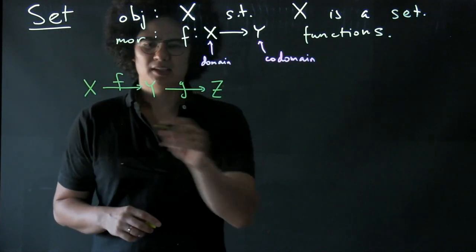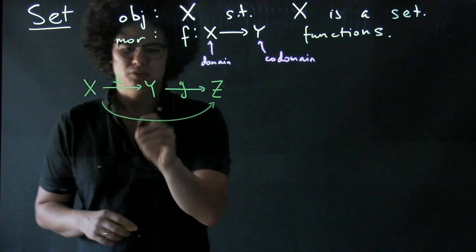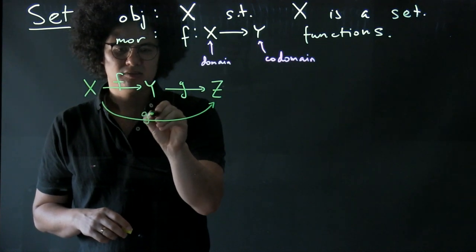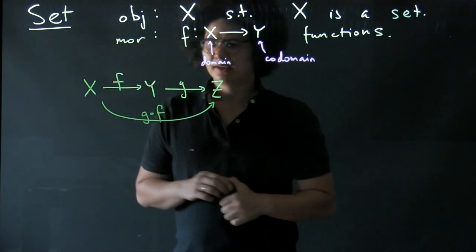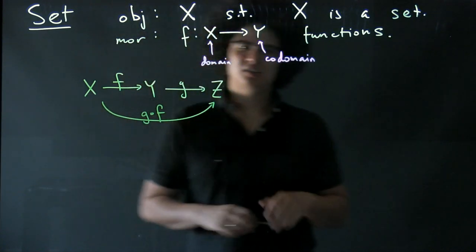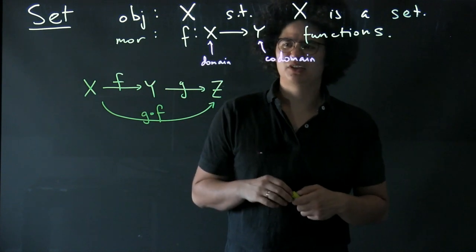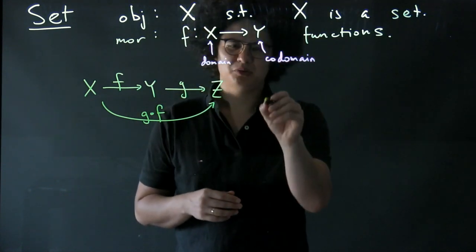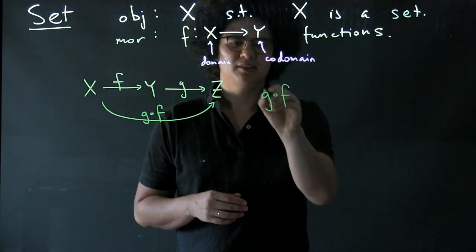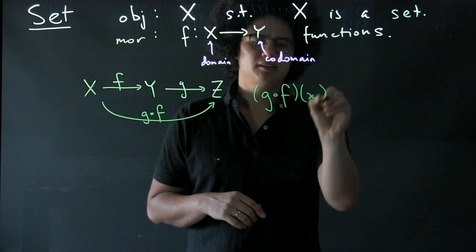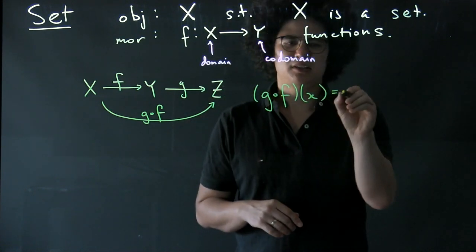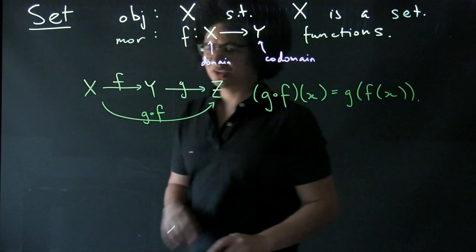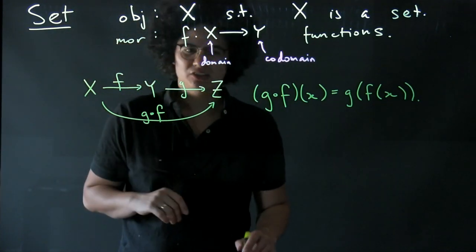We compose them by saying that the composed function is G∘F. In general I'm going to leave out the composition symbol later on in these videos, but for now we're going to keep using it. How do we define this function? We apply this function to an element x in X, and that's going to be G applied to F applied to x. So we have composition.